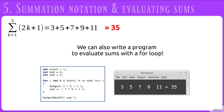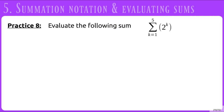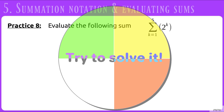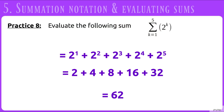We could also write a program to evaluate a sum with a for loop: declare a start, end, and sum variable; initialize sum at 0; iterate from k equals the starting value to the ending value incrementing by 1; and add 2k plus 1 onto sum each time. Practice: evaluate the sum from k equals 1 to 5 of 2 to the k. You should get 2 plus 4 plus 8 plus 16 plus 32, which sums to 62.